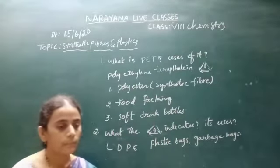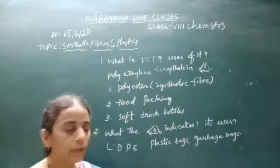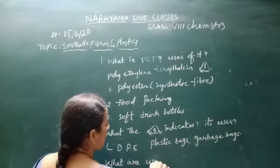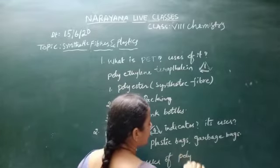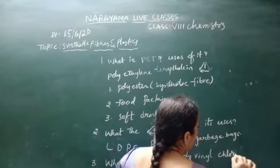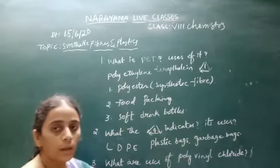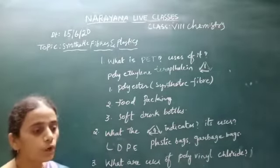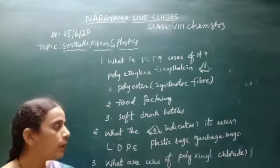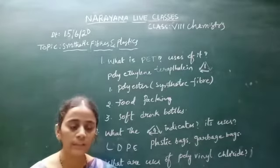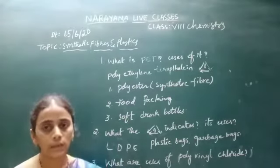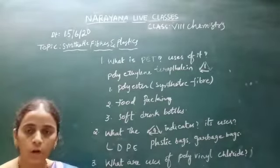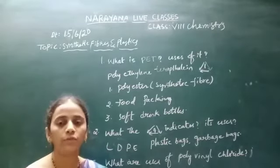The next question is: what are the uses of polyvinyl chloride? Polyvinyl chloride is called PVC in short form. Its code is 3. Polyvinyl chloride is widely used in making boots, shower curtains, window borders, and imitation leather.